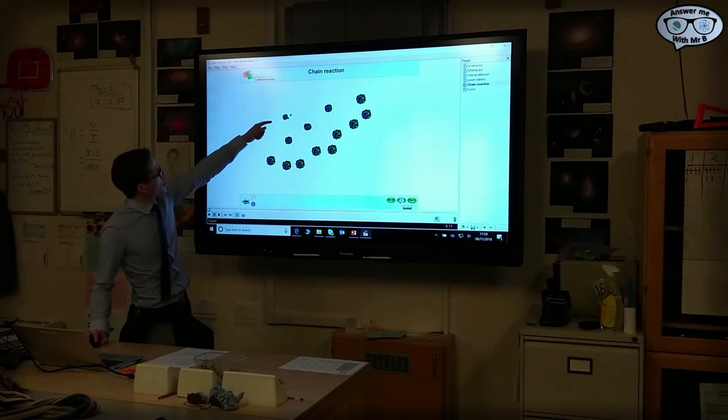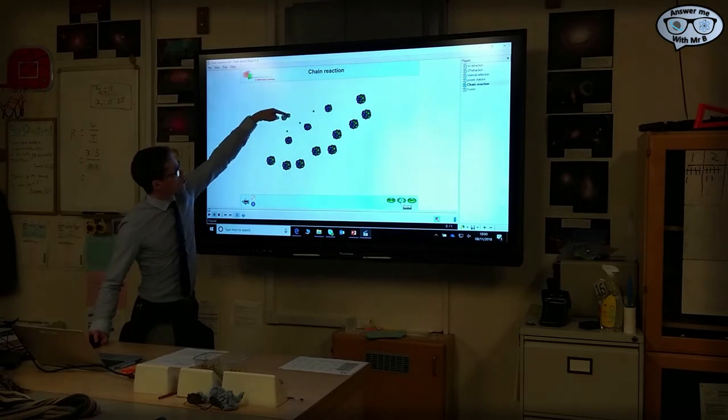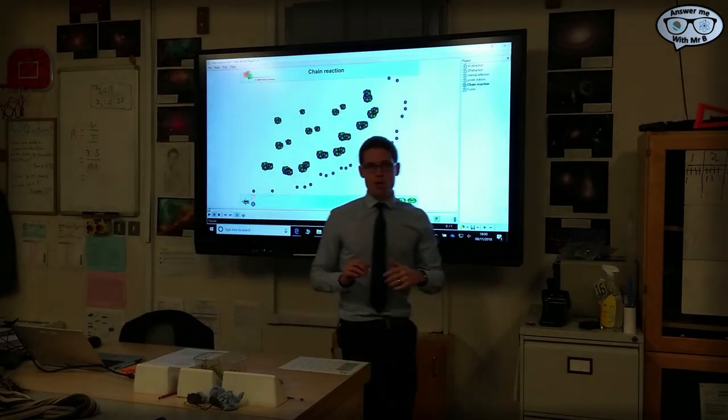If I slow this down, you can see your neutron coming in. That makes this nucleus unstable and causes it to split, also releasing two or three more neutrons, which split more nuclei, and you get the picture.